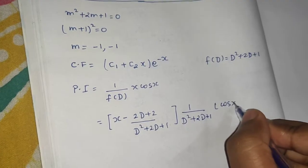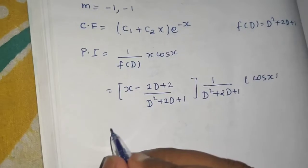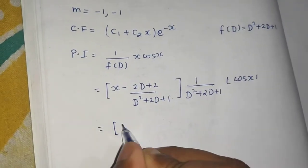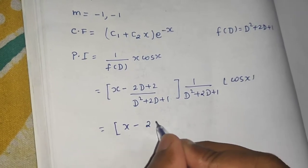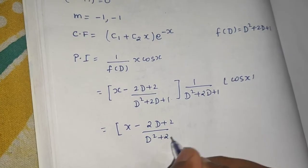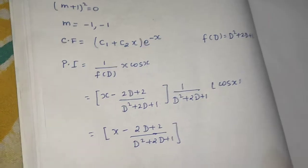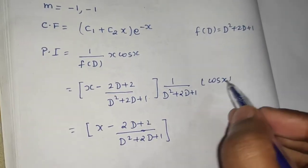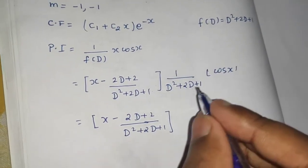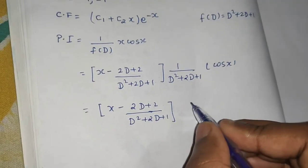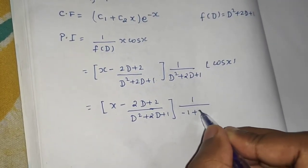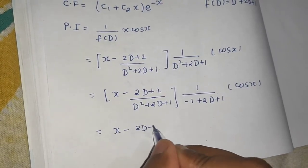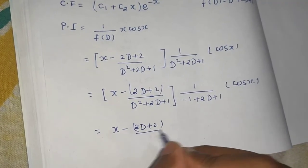Here v is cos x, so we first solve (1/(D² + 2D + 1))·cos x and then handle the remaining bracket. Whenever you have cos(ax) or sin(ax), replace D² by −a². Since a = 1, replace D² by −1: (1/(−1 + 2D + 1))·cos x = (1/2D)·cos x. So the expression is x minus (2D + 2)/(D² + 2D + 1) times (1/2D)·cos x.